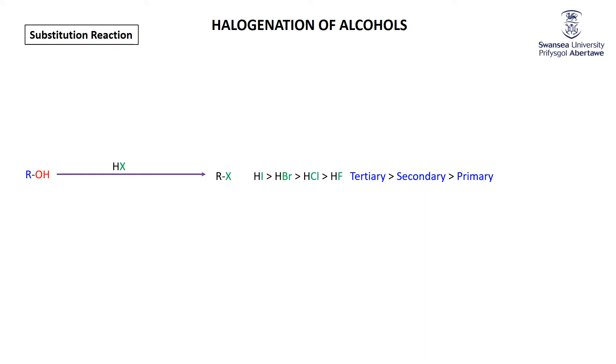It's worth pointing out these used to be on the A-level syllabus. They might still be on one of the boards, but there are alternatives you can use, especially to make primary halides, because this simple hydrohalogenation of alcohols is fraught with possible issues for primary and secondary alcohols.